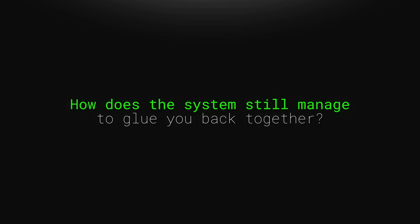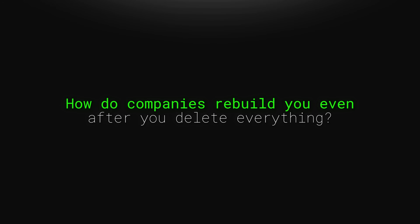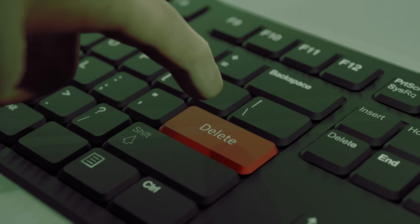But that raises the next question: if you break the anchors that define your identity, how does the system still manage to glue you back together? Breaking your identifiers feels like freedom until you realize the internet still knows who you are anyway. Deleting accounts doesn't stop your identity from being reconstructed — it comes from everyone and everything around you. Your phone number lives inside hundreds of contact lists you've never seen. When someone else syncs their contacts, it recreates part of your profile behind your back.